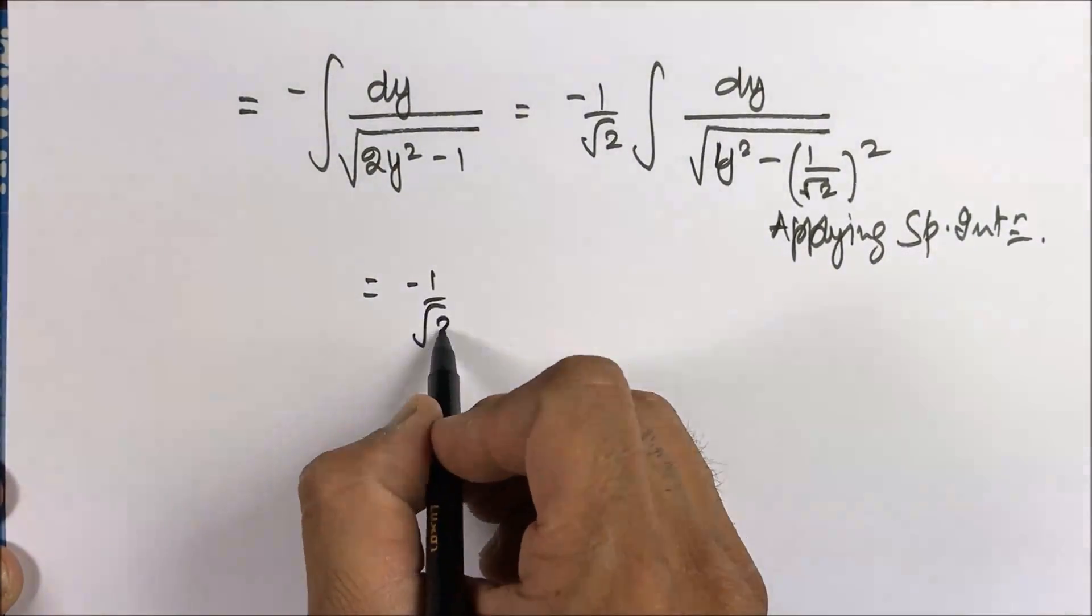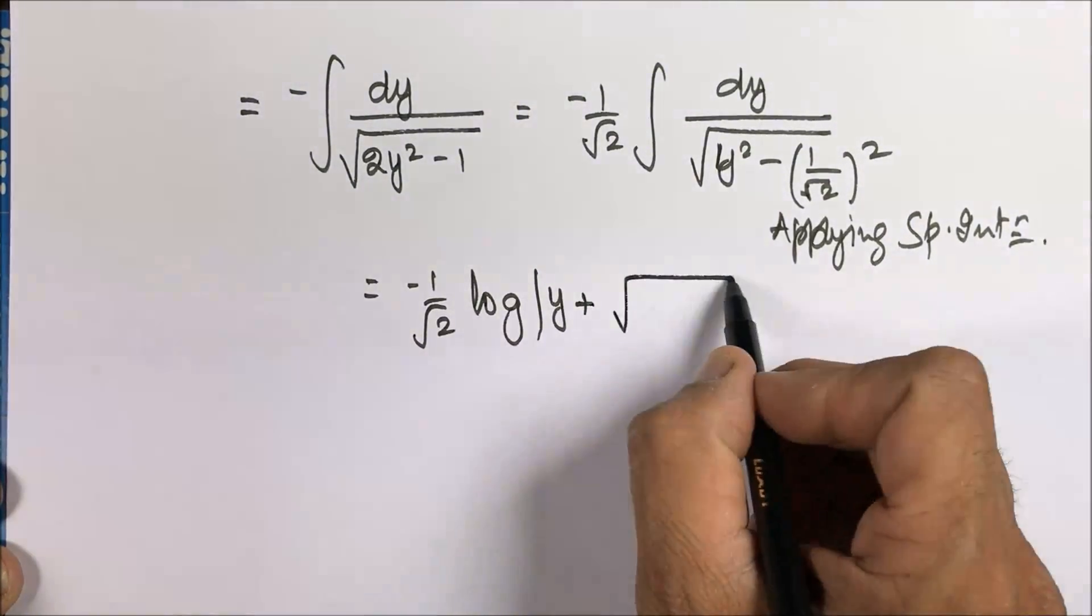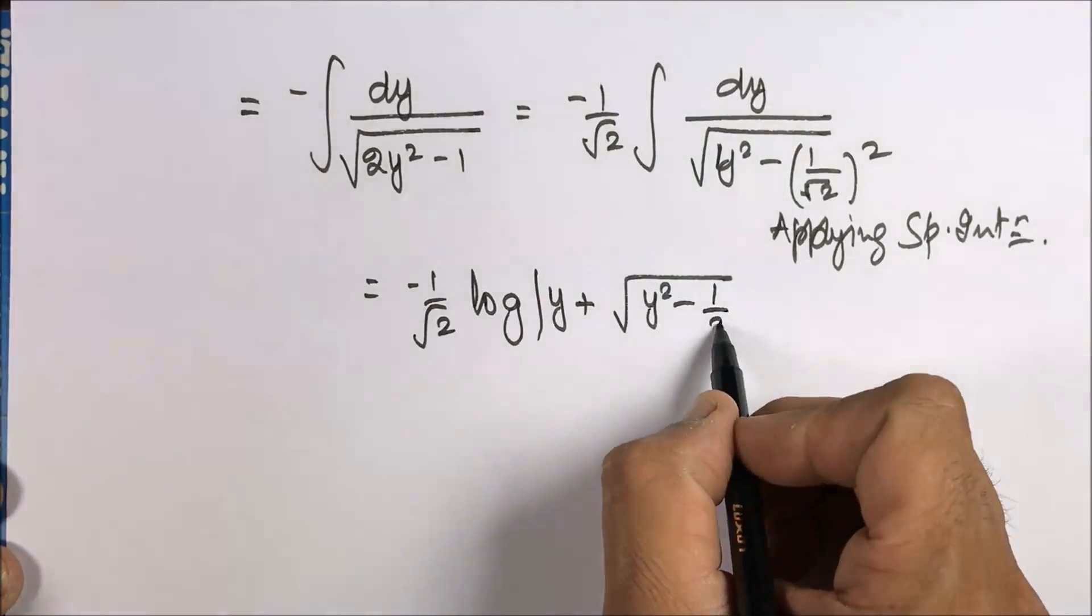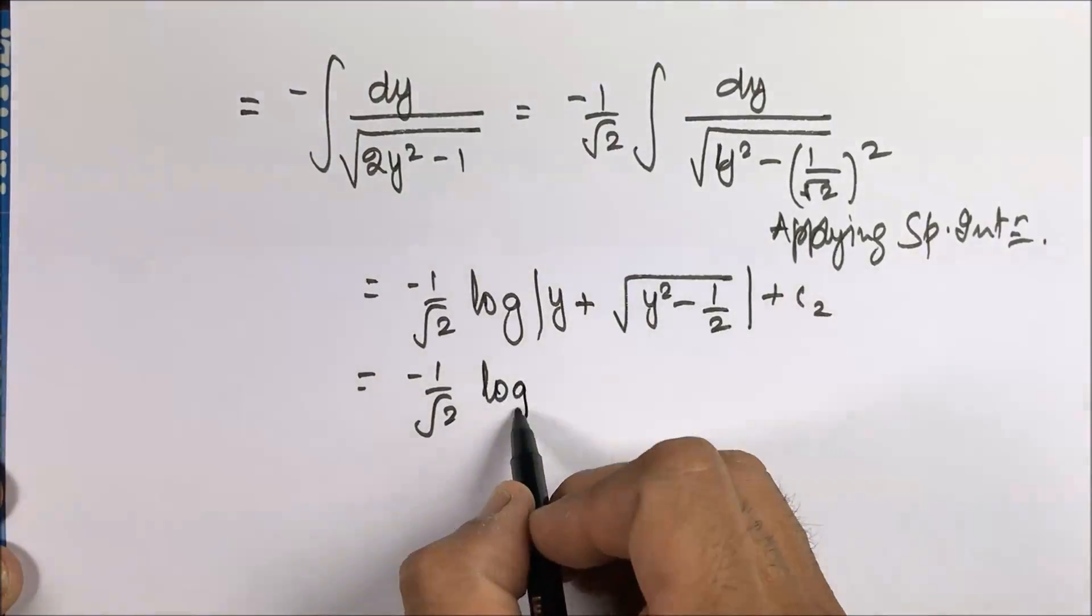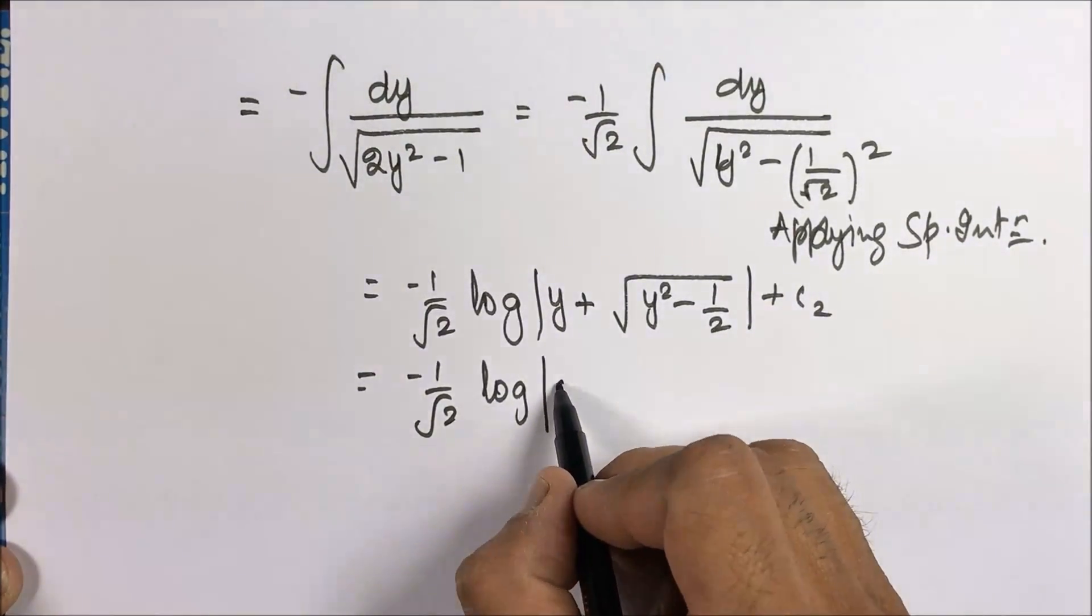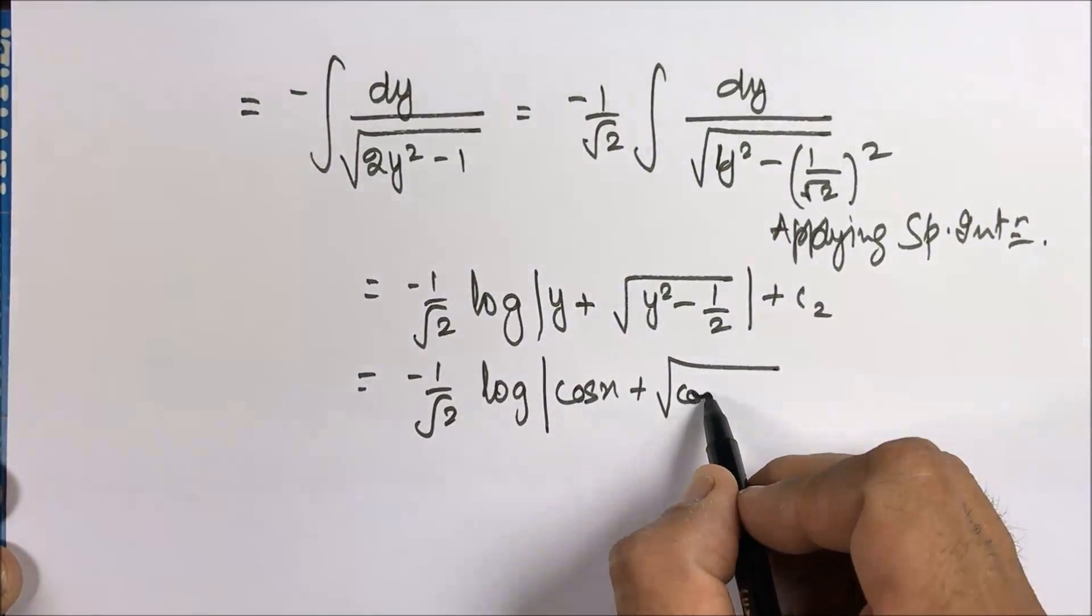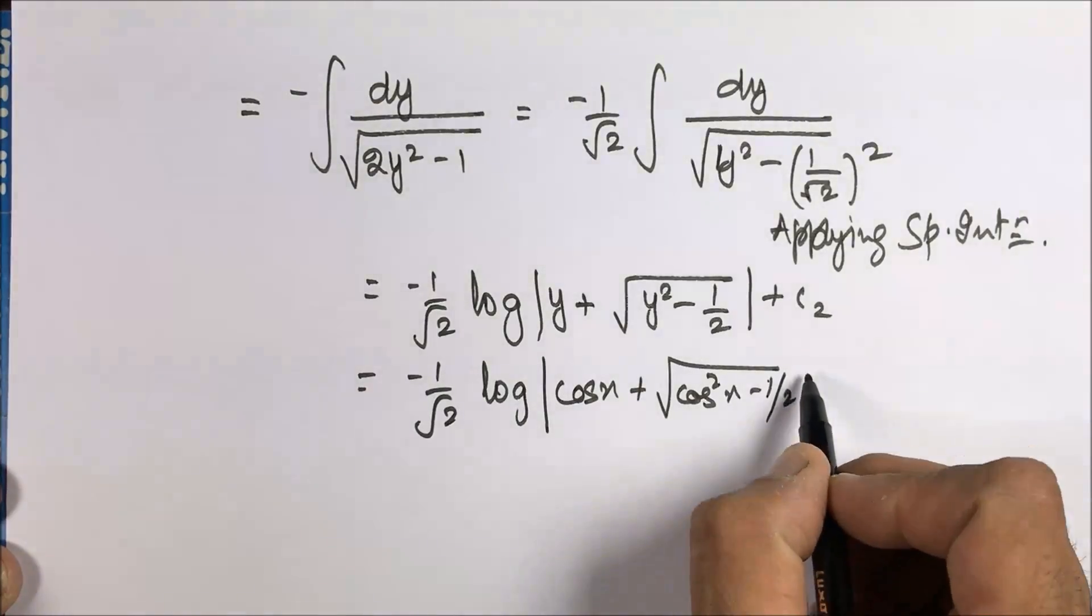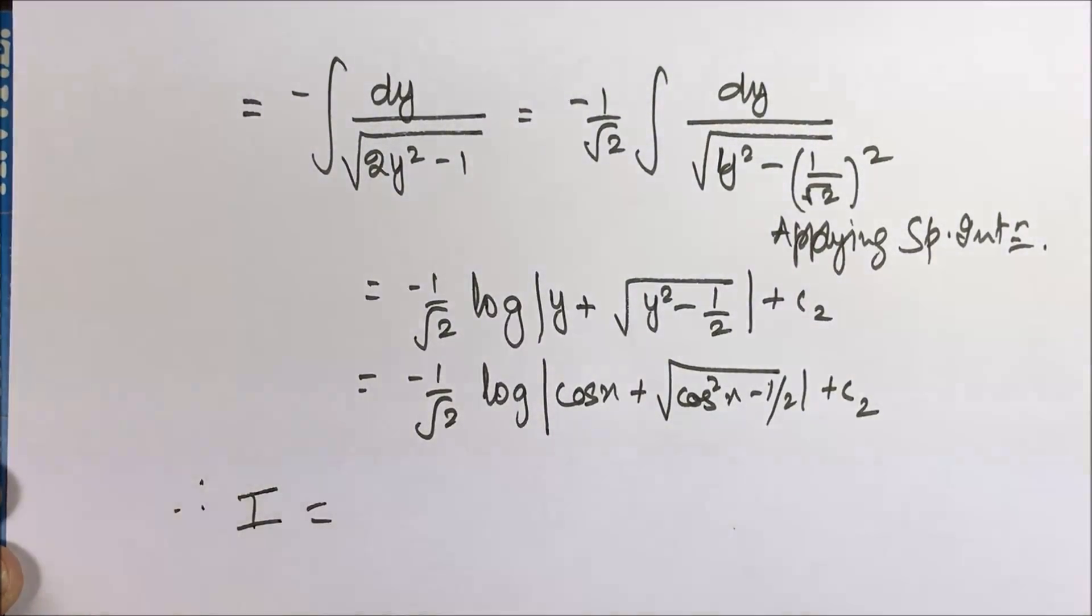We get minus 1 by root 2 log mod y plus under root of y square minus 1 by 2 plus c2. So the answer is minus 1 by root 2 log mod cos x plus under root of cos square x minus 1 by 2 plus c2. So our final answer is therefore I equals I1 minus 2 times of I2.